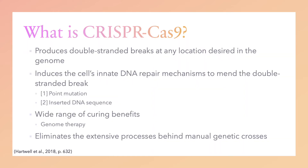The CRISPR-Cas9 system can be used to induce double-stranded breaks at almost any position in the genome. Essentially, it utilizes a protein as a guide to bring a DNA-cleaving enzyme to a specific genomic location, creating a double-stranded break at that site. The cell's innate, subsequent DNA repair of the break can then result in a point mutation with the insertion or deletion of one or a few base pairs, or the knock-in of a specific DNA sequence. The ability to flexibly alter genomes has a wide range of curing benefits. Such pinpoint genome editing has commonly allowed for gene therapy, in which mutant alleles in the genomes of the somatic cells of a person suffering from a genetic disease can be changed to wild-type alleles.